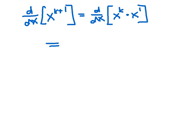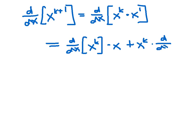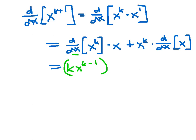The product rule says the derivative of x^k · x equals the derivative of x^k times x, plus x^k times the derivative of x. Now we're really close to the end. I can use the inductive hypothesis to replace the derivative of x^k with k·x^(k−1). Everything else is either already there — like the 'times x' and 'plus x^k' — or uses our additional assumption that the derivative of x equals 1.